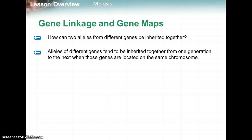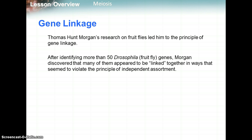How can two alleles from different genes be inherited together? Alleles of different genes tend to be inherited together from one generation to the next when those genes are located on the same chromosome. We heard about Morgan previously, and he did research with fruit flies about the principle of gene linkage.